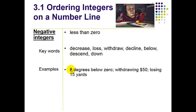If I said eight degrees below zero, that would be represented as negative eight. If I was withdrawing $50, that would be a minus 50 or a negative 50. Losing 15 yards would be minus 15 or a negative 15.